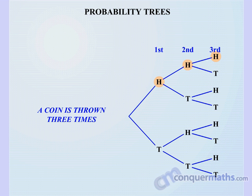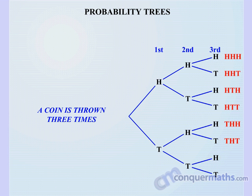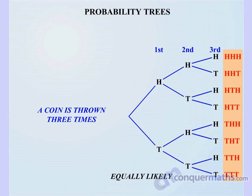The possible outcomes listed are: heads-heads-heads, heads-heads-tail, heads-tail-head, heads-tail-tail, tail-heads-heads, tail-heads-tail, tail-tail-head, and tail-tail-tail. That gives us our full list of results in the tree diagram. At this stage all outcomes are equally likely. However, if we start assigning probability branches then that changes things.